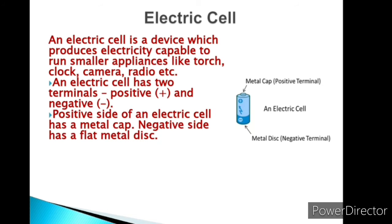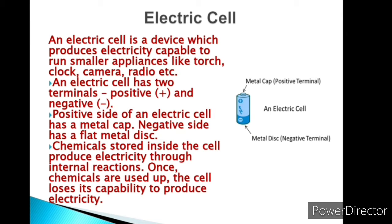Now come to electric cells. What is an electric cell? An electric cell is a device which produces electricity capable of running small appliances like torch, clock, camera, radio, etc. An electric cell has two terminals - positive and negative. The positive side of an electric cell has a metal cap and negative side has a flat metal disc.